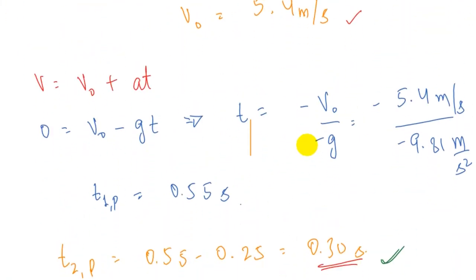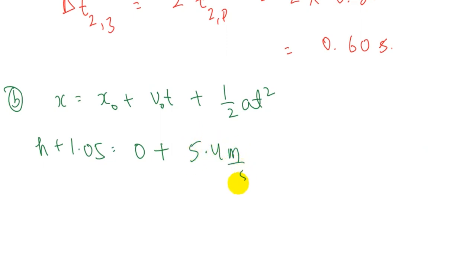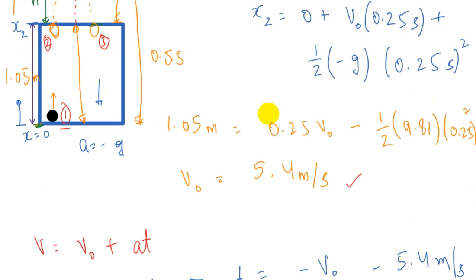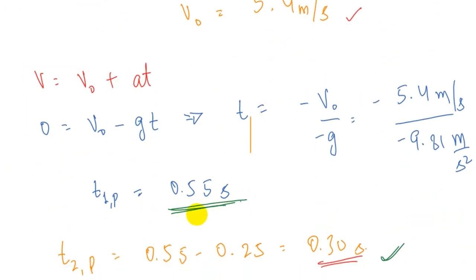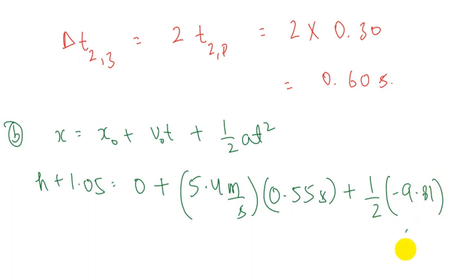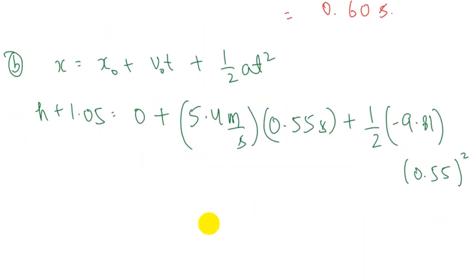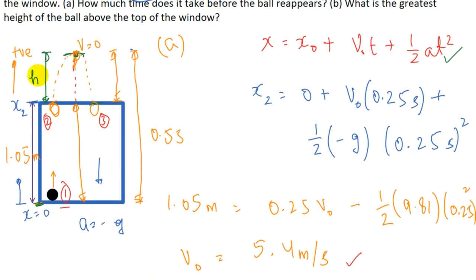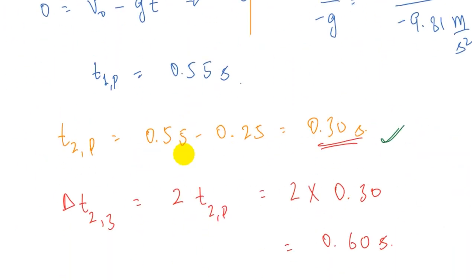Substituting: h + 1.05 = 5.4 × 0.55 + ½ × (−9.81) × (0.55)². We have only one variable h. Solving with a calculator, h comes out to be 0.44 meters. So the maximum height of the ball above the window is 0.44 meters. This is the final answer for part B.